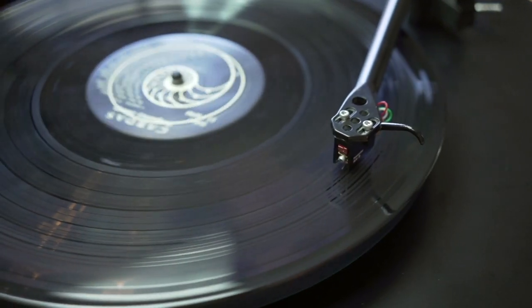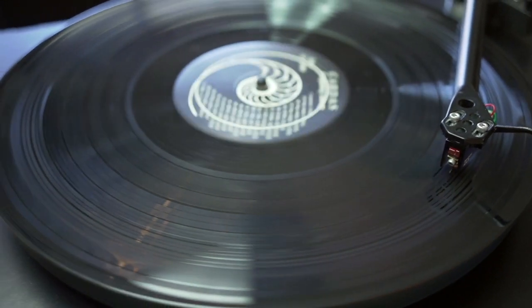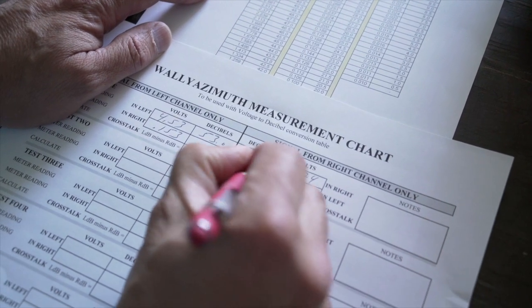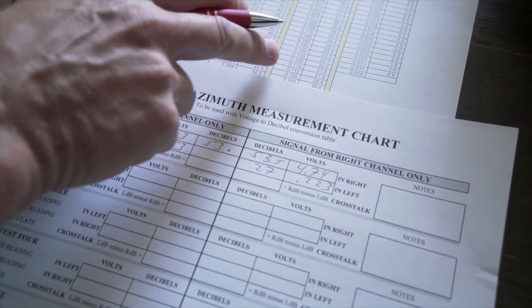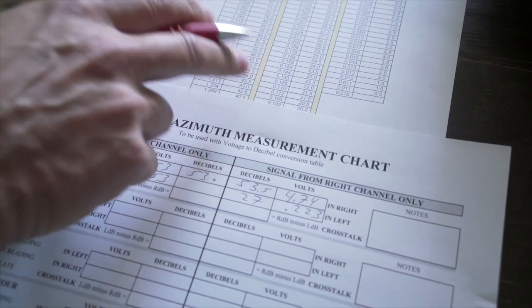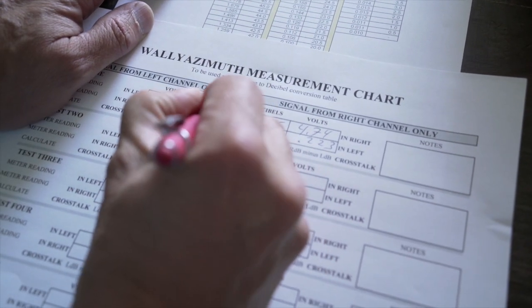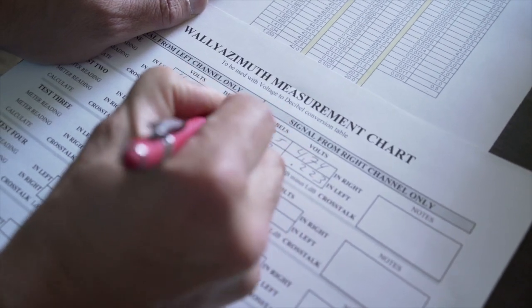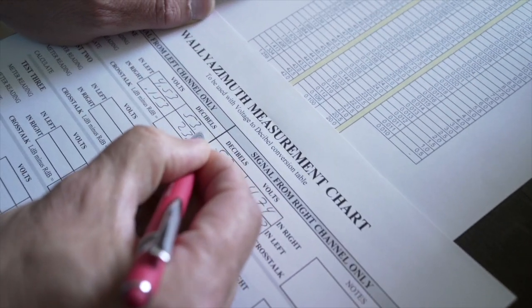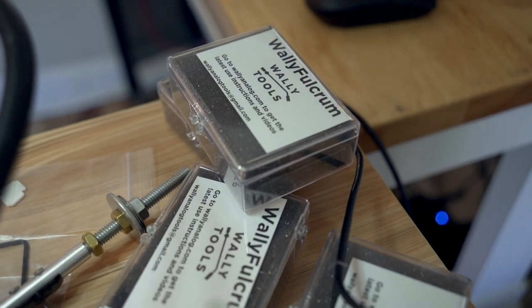We're currently working on developing a tool to allow you to measure zenith error at home rather than having to send your cartridge here to us in our lab. This is a very critical alignment parameter that owners of fine line contact styli need to attend to in order to get the maximum amount of information from the groove. When that tool is ready, we'll update this video.